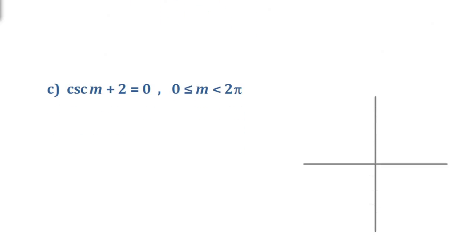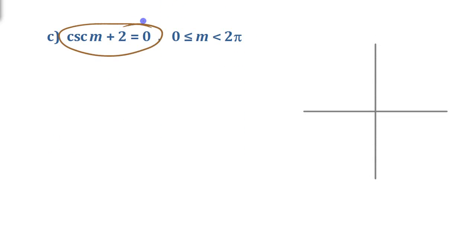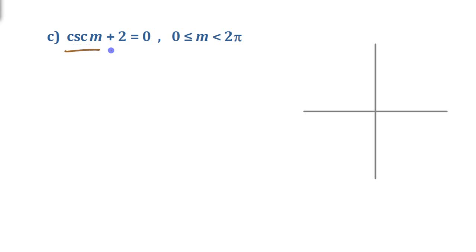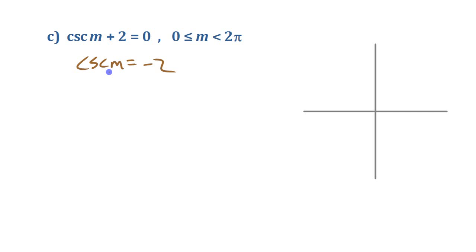Let's try one more: cosecant m plus 2 equals 0, over the same domain of 0 to 2 pi. First isolate the trig function: cosecant m equals negative 2. Then convert it to one of the primary three trig functions. Since cosecant is the reciprocal of sine, this becomes sine of m equals the reciprocal of negative 2, which is negative 1 over 2.